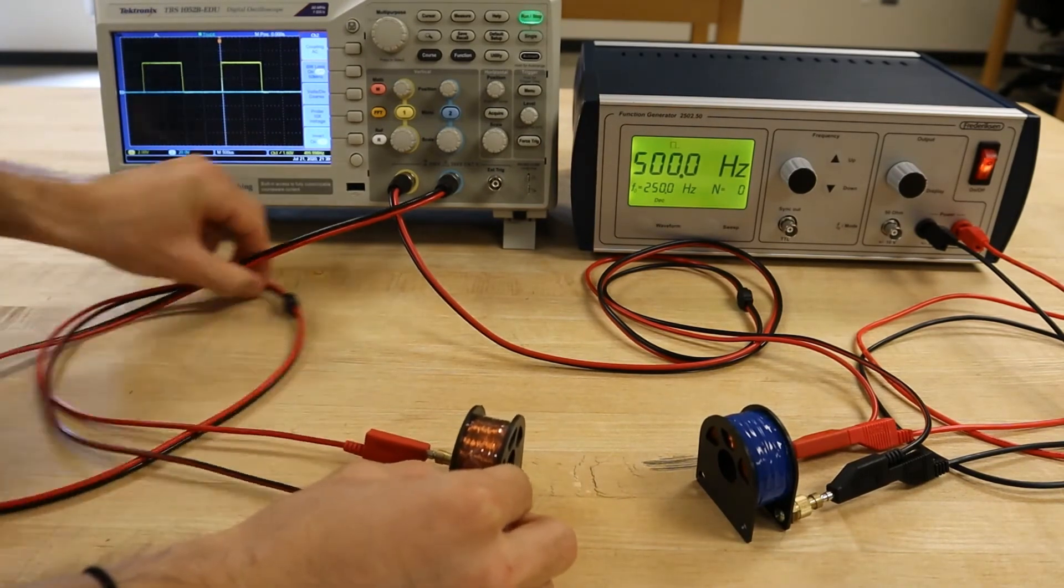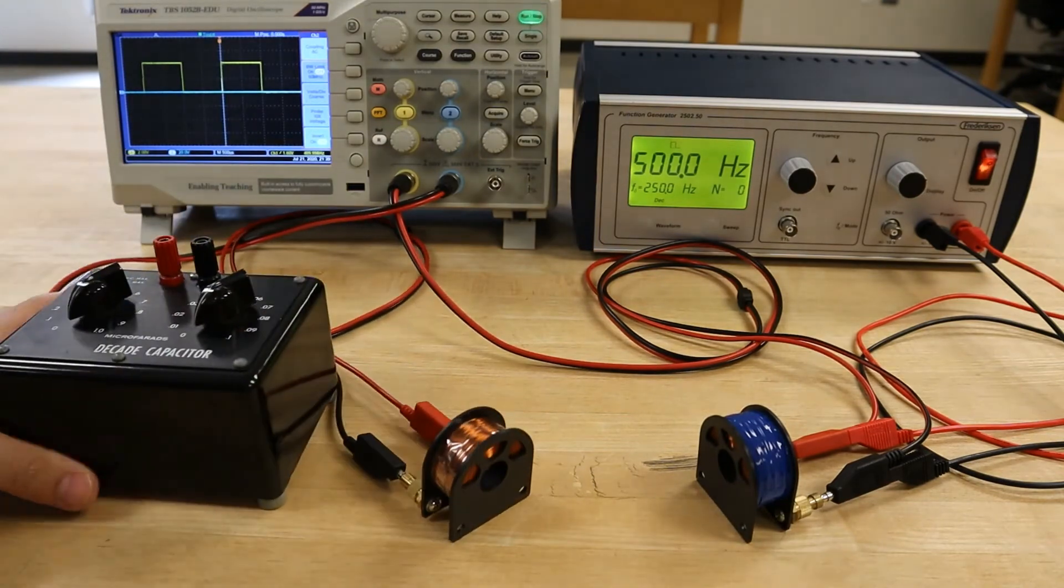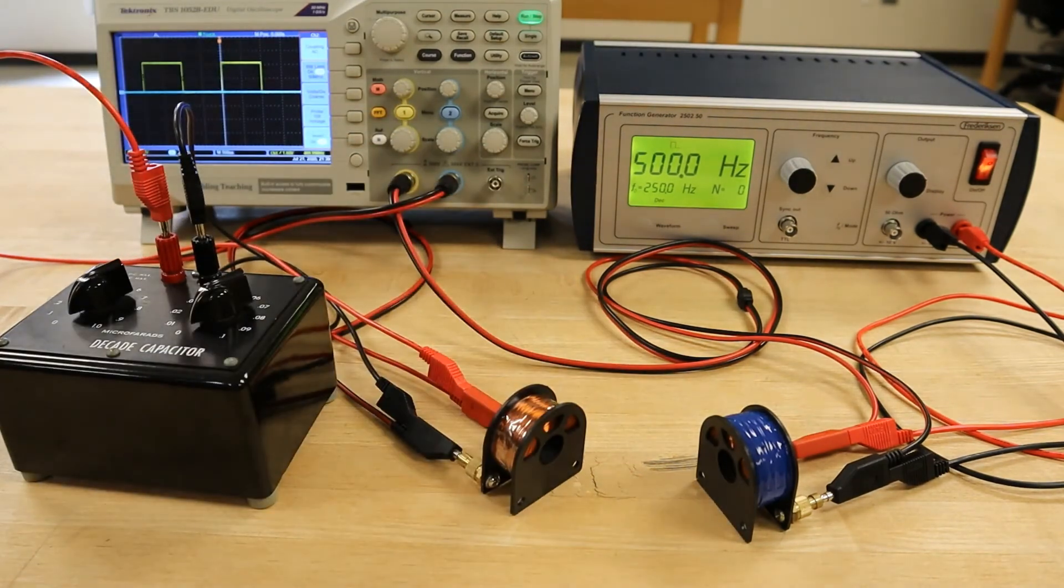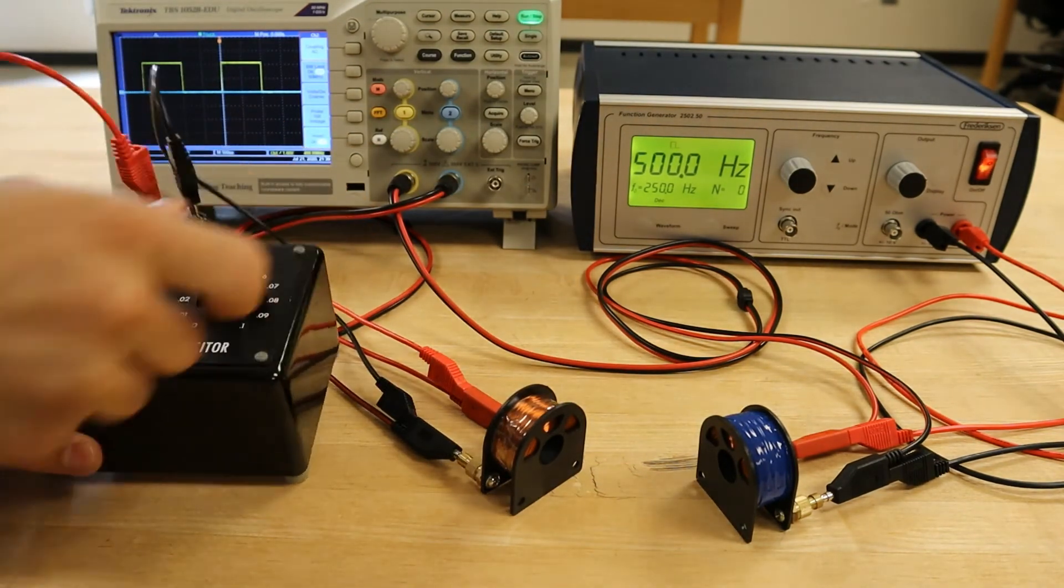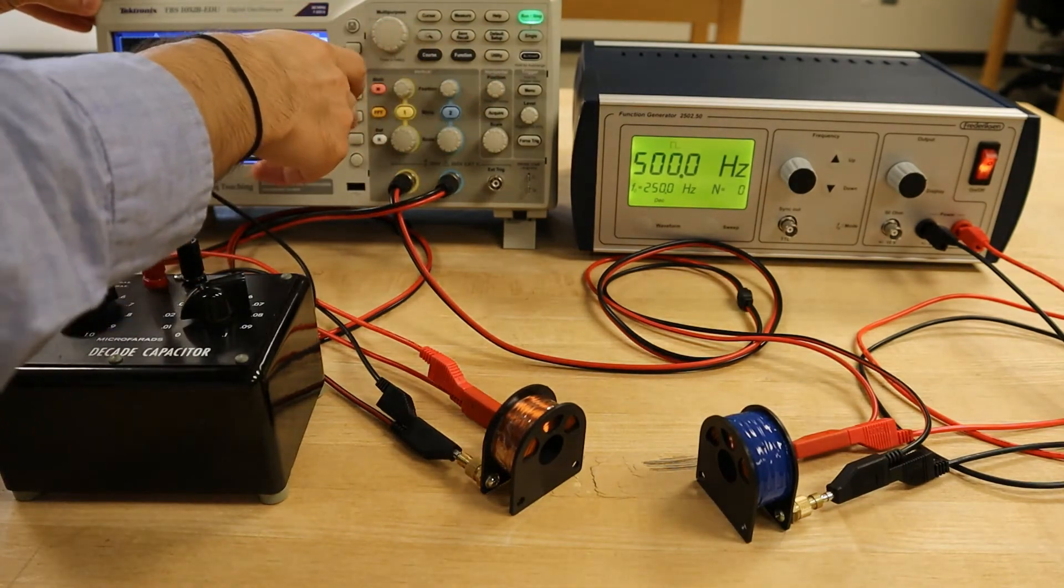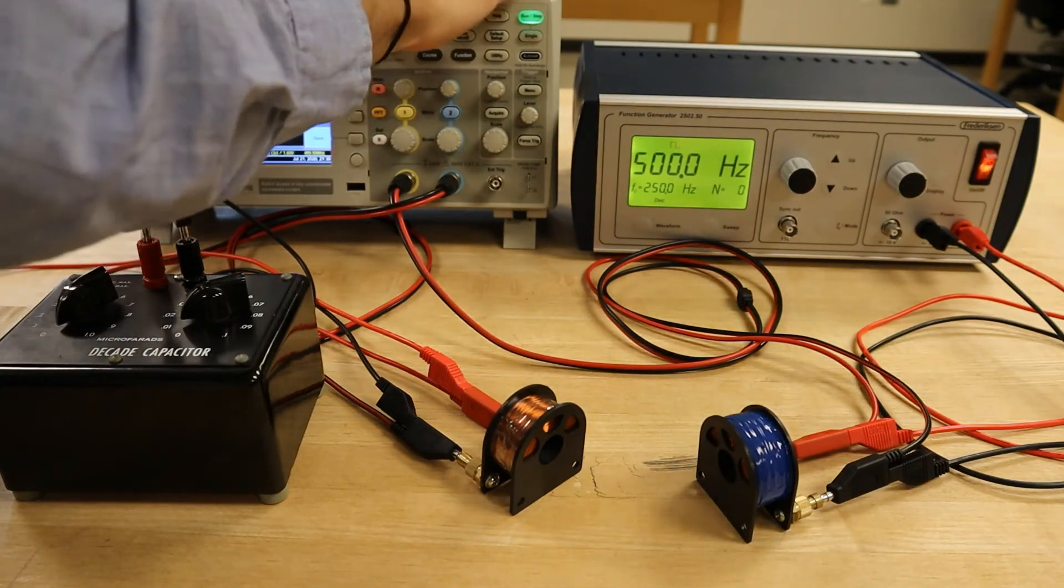We will also connect in parallel to this ghillie coil our decade capacitor box. The capacitor should be set to 0.01 microfarads, and the second channel of the oscilloscope should also be set to 1x attenuation and DC coupling.